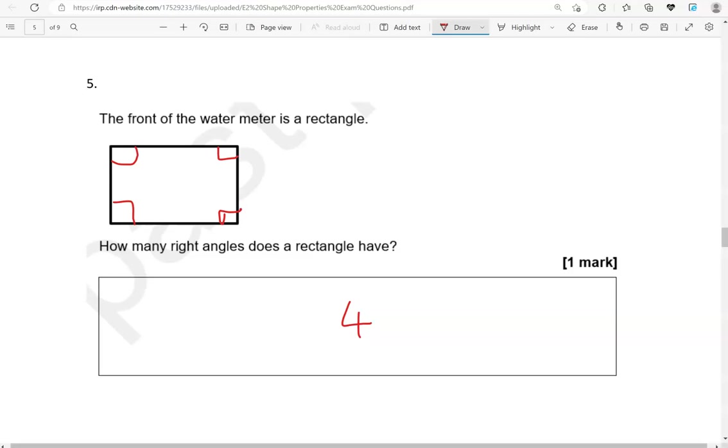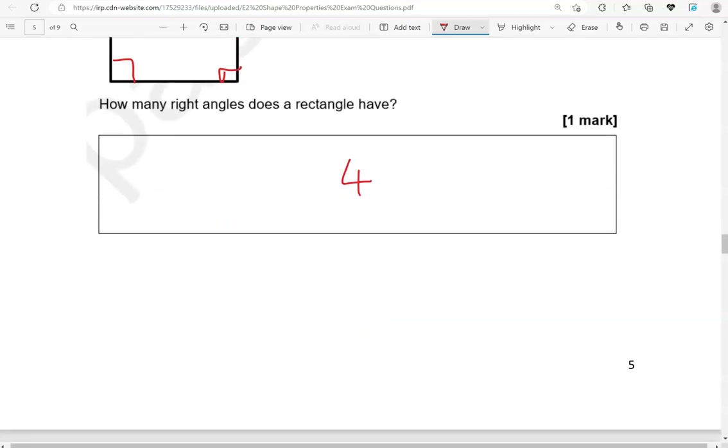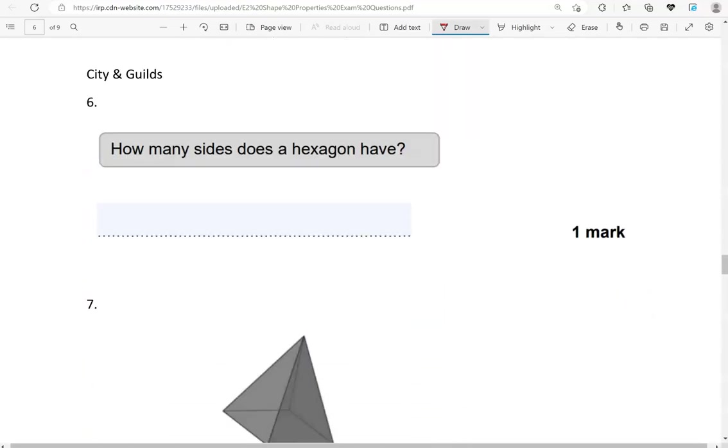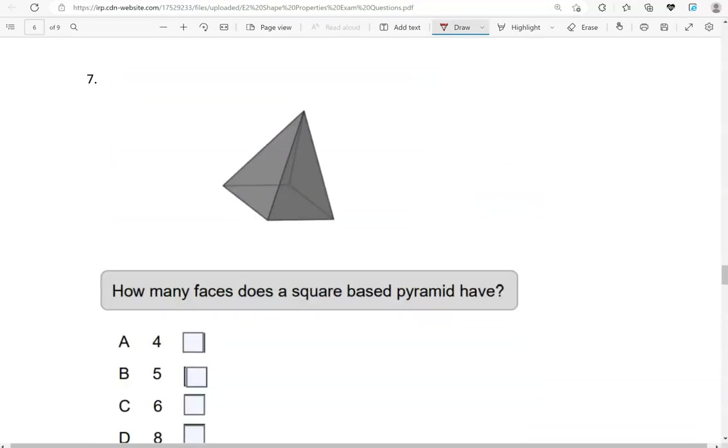How many sides does a hexagon have? Hexagon has—there is that X in there that helps you remember—so it has six sides. This is sort of a regular hexagon.